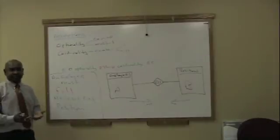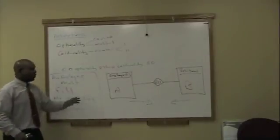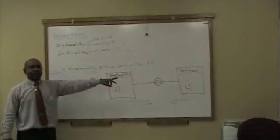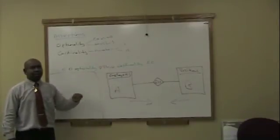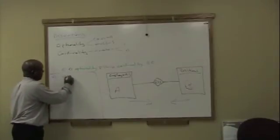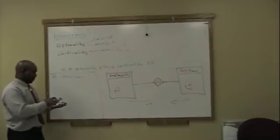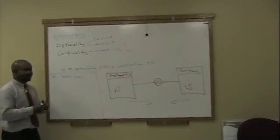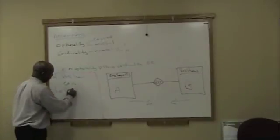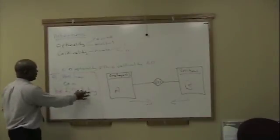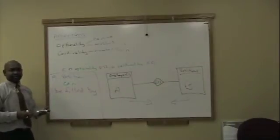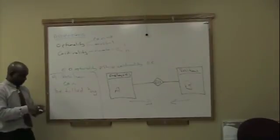Now we're going to look at it the other way around, starting with position. So: a position — can or must be filled? Can. We can have vacancies. Then we have our relationship — 'be filled' — and then 'by', adding a few words to pad it so it makes sense. Cardinality: only one, at least one, or many? At least one.